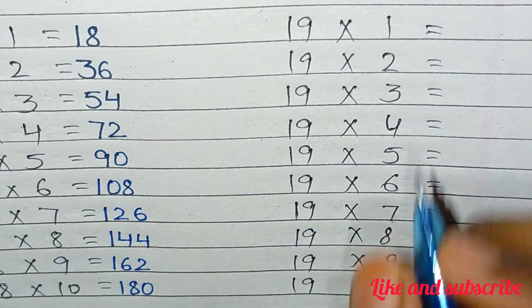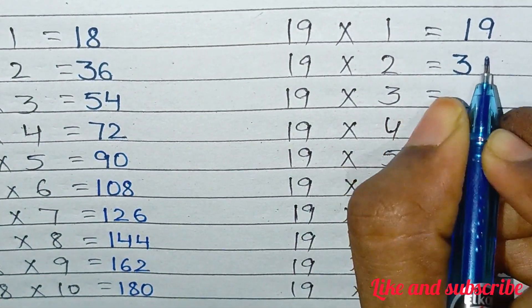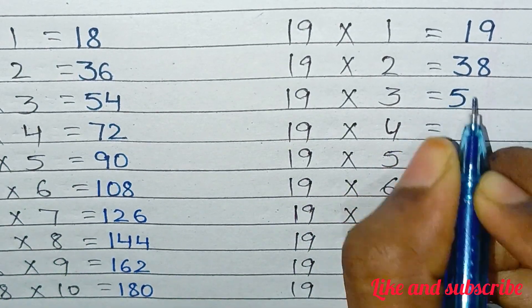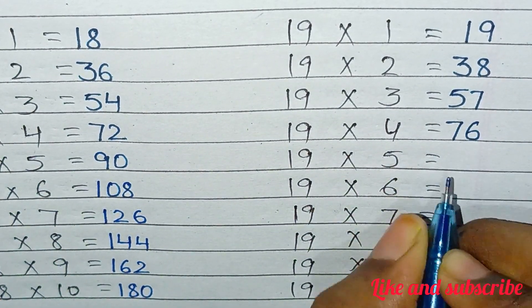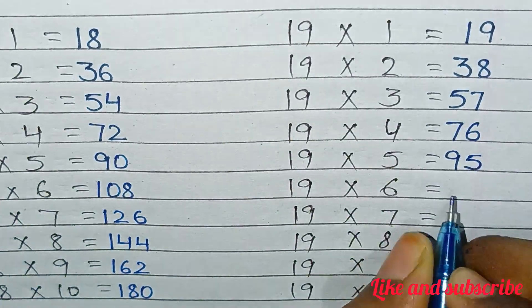19×1=19, 19×2=38, 19×3=57, 19×4=76, 19×5=95.